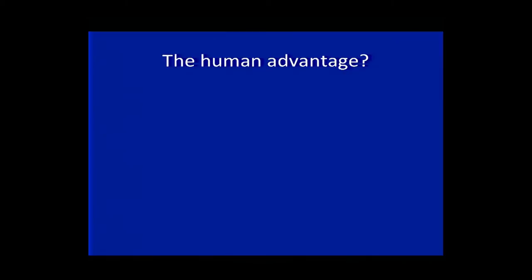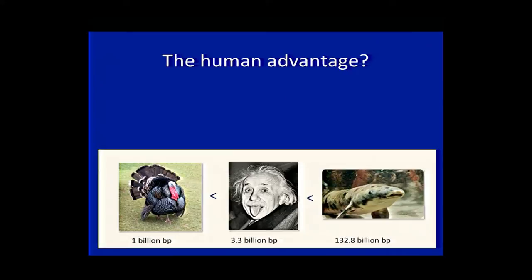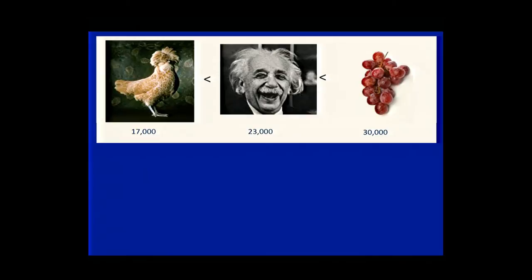One of the fascinating things we've discovered is that among the planet's living creatures, our position on top of the heap in terms of complexity fell into question. The haploid human genome of 3.3 billion base pairs falls somewhere between a lungfish and a turkey. This is known as the C-value paradox — the fact that organismal complexity does not increase with the number of base pairs. Some single-cell protists and even salamanders have genomes much larger than we do.